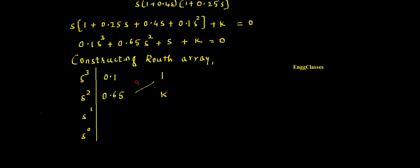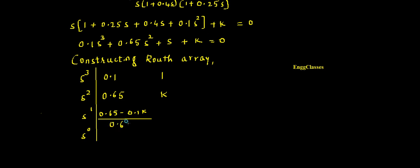Completing the Routh array: for the s¹ row, the element is (0.65×1 − 0.1×k) / 0.65 = (0.65 − 0.1k) / 0.65. For the s⁰ row, the last element is simply k.